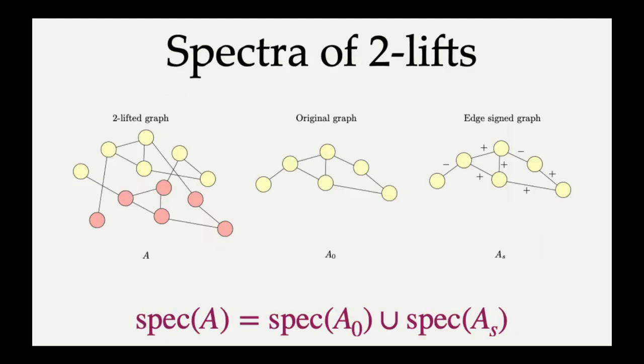Now, since we want our 2-lifted graph to be near-Ramanujan, we mathematically need some way of obtaining a handle on the spectrum of the lifted graph. And fortunately, such a handle does exist. So let's say you start with some graph, which is labeled as original graph in the slide. And this original graph has an adjacency matrix A₀. Now you place an edge signing on this graph, and you can see some of the edges are labeled plus, some are labeled minus. And you perform a 2-lift according to the signing.